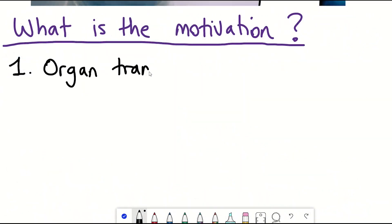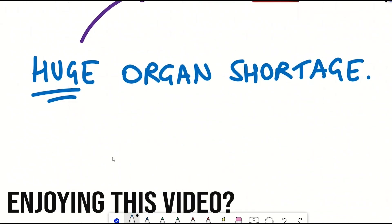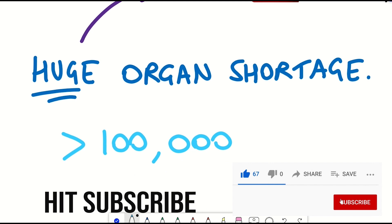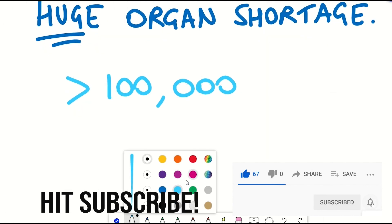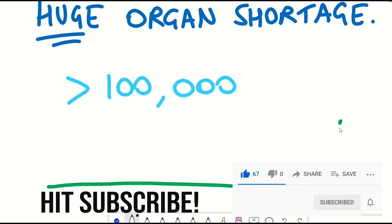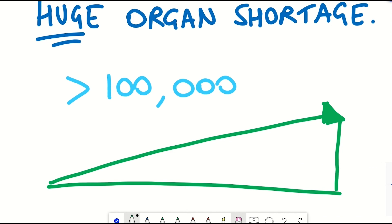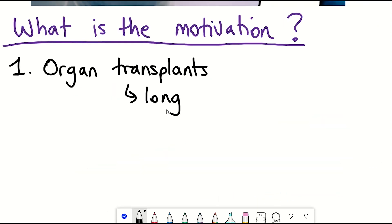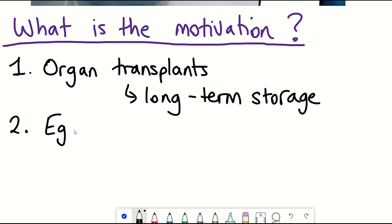Firstly, one motivation is for organ transplants. You're probably well aware that there is currently a huge shortage of organs, with around 17 people in the US dying every day waiting for a transplant, and this number is only expected to grow as the population increases and gets older. Cryopreservation is also important for storing cells like oocytes and sperm to preserve one's fertility.